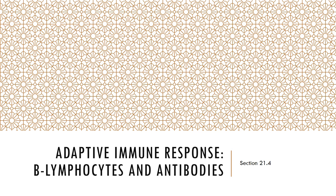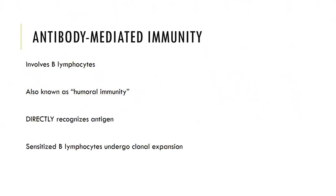Now let's look at the adaptive immune responses involving B lymphocytes and antibody-mediated immunity. Antibody-mediated immunity is provided by the action of B lymphocytes, which are produced in the red bone marrow and remain there to mature. It is also called humoral immunity because B lymphocytes attack antigens while in the body fluids — blood, lymph, interstitial fluid, etc. Although B lymphocytes reside in the spleen and lymph nodes, many are also circulating in the body fluids where they can directly recognize antigens and then undergo clonal expansion.